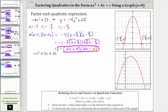For the second expression, we begin by graphing y equals negative x squared plus five x plus 36. I've already graphed this function on the right, and notice how we can easily determine the horizontal intercepts — we have one here at negative four comma zero, and one here at nine comma zero.